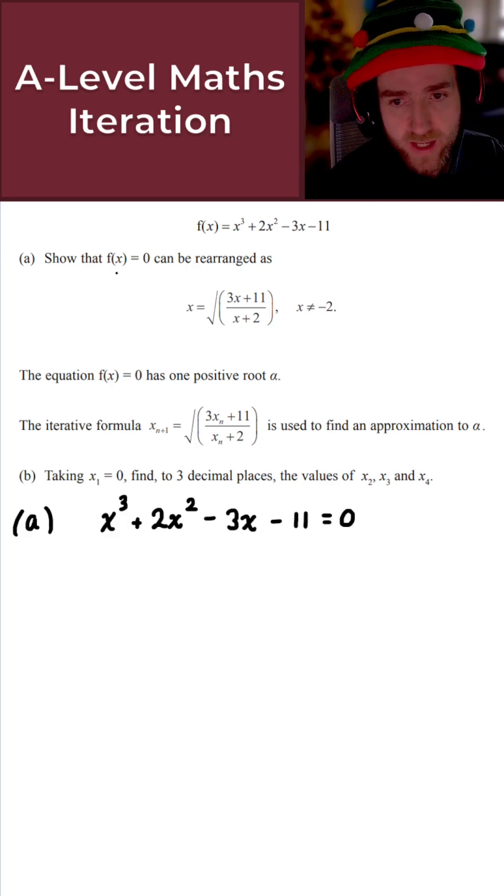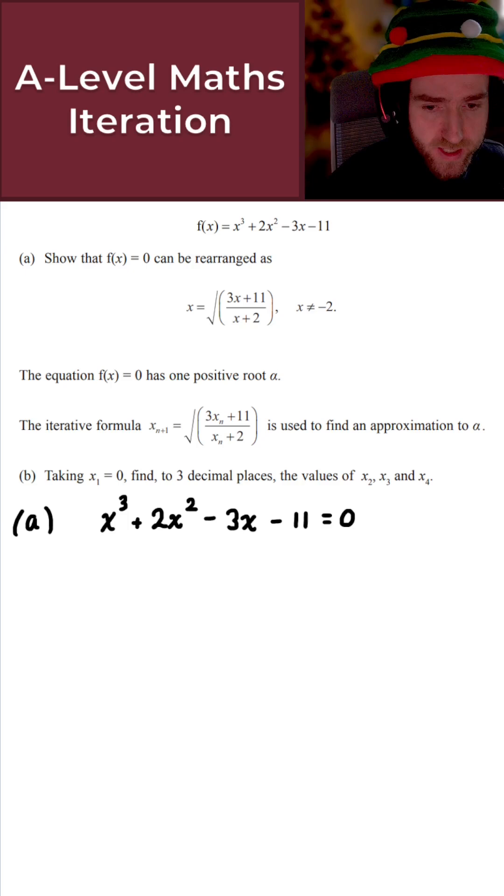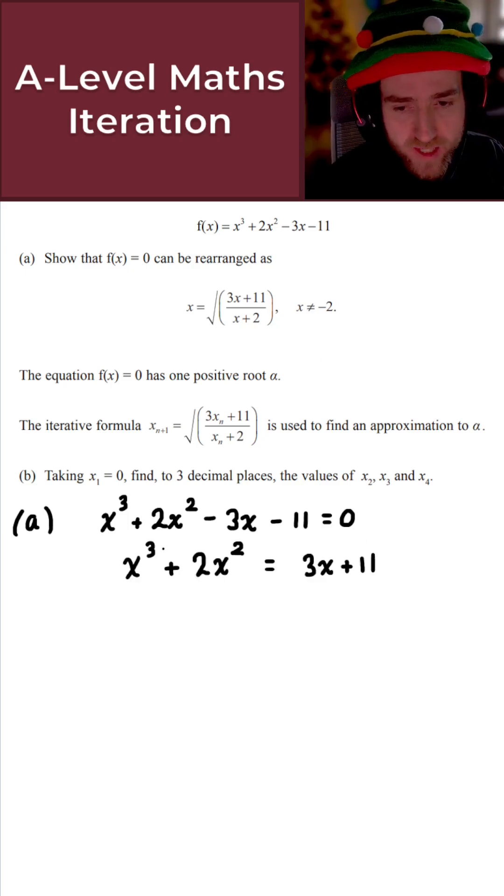So first things first, if f of x equals 0 here, we can just take f of x as it is and set that equal to 0. Now we want this result here and what I can see is for the numerator here of this fraction, they have 3x plus 11. So let's just add 3x and 11 to both sides. And once we do that, what we obtain is x cubed plus 2x squared equals 3x plus 11. Perfect.